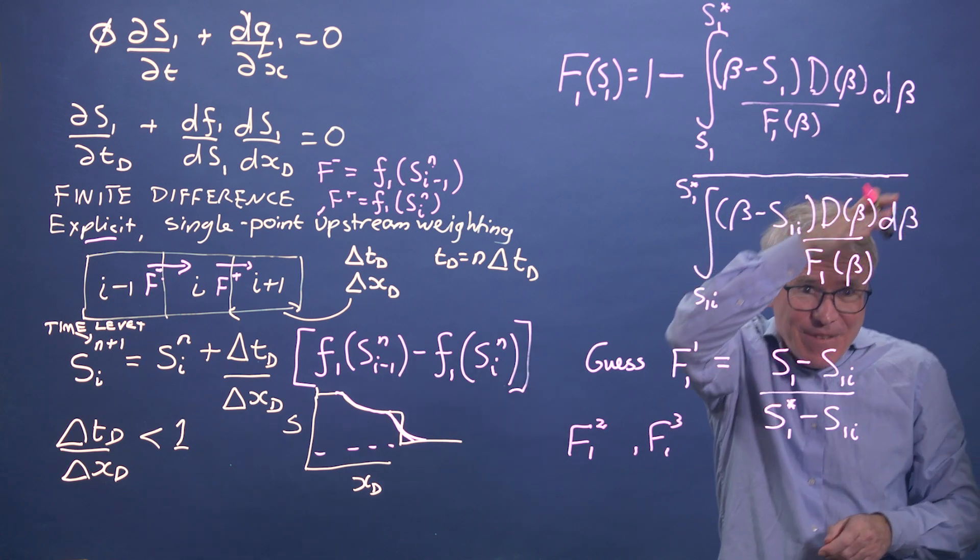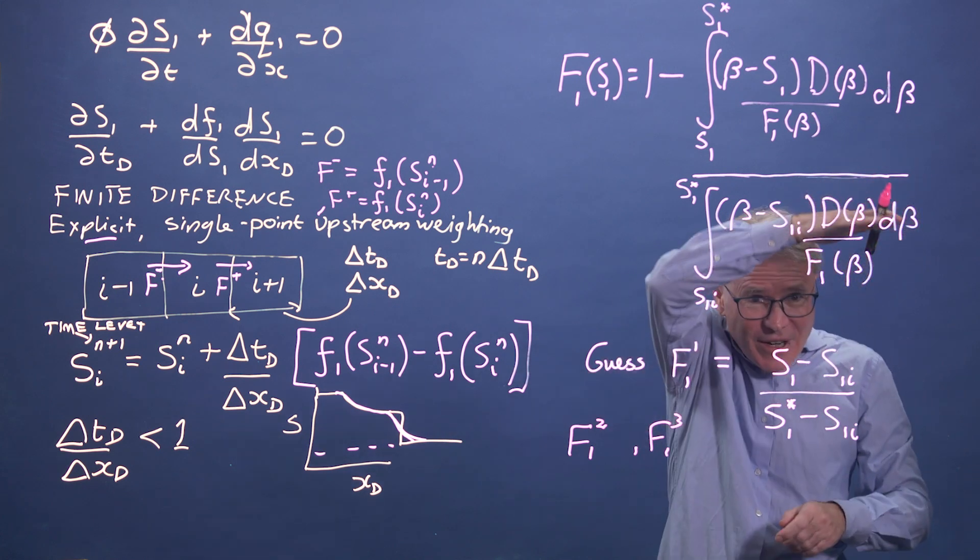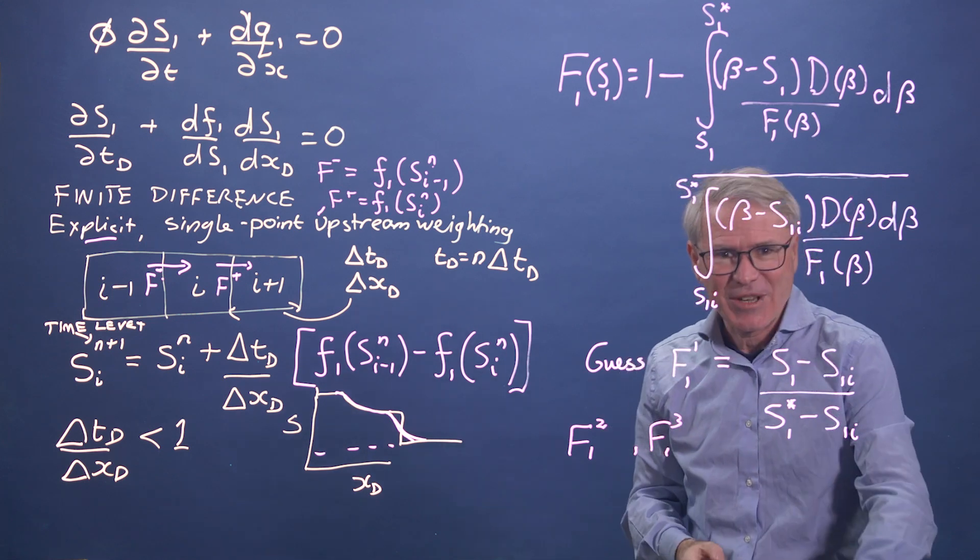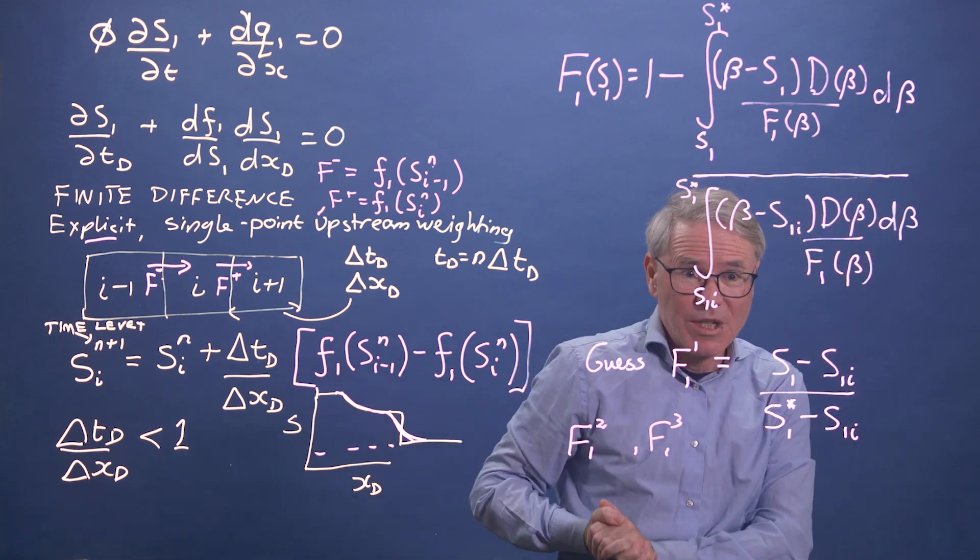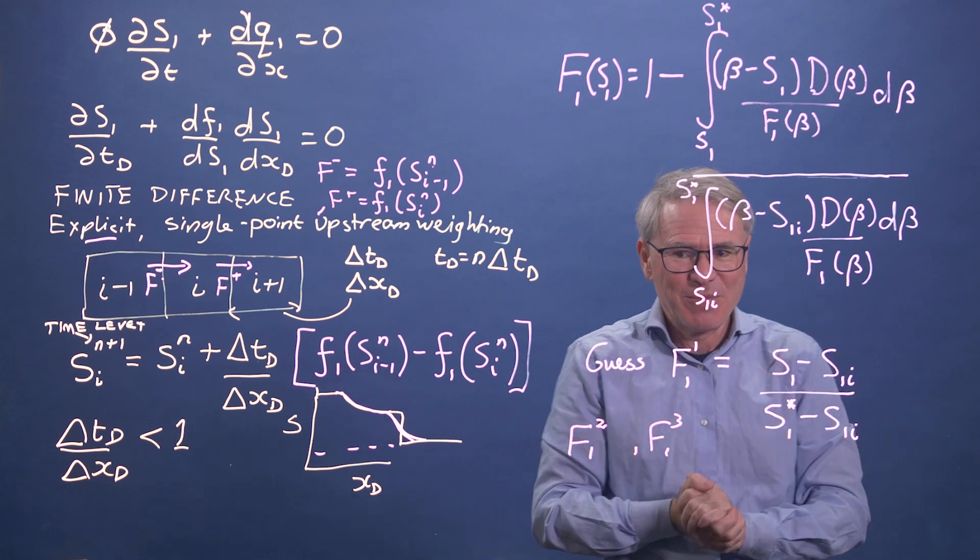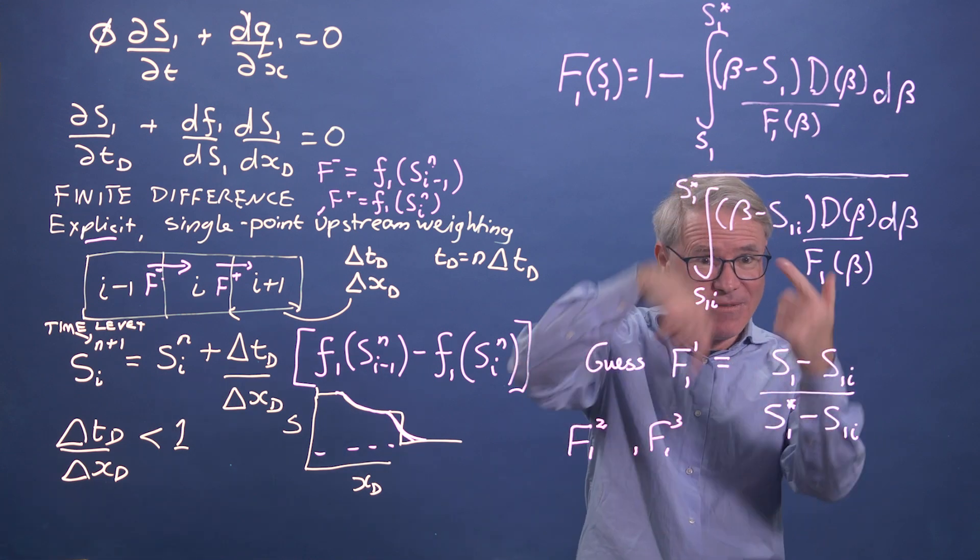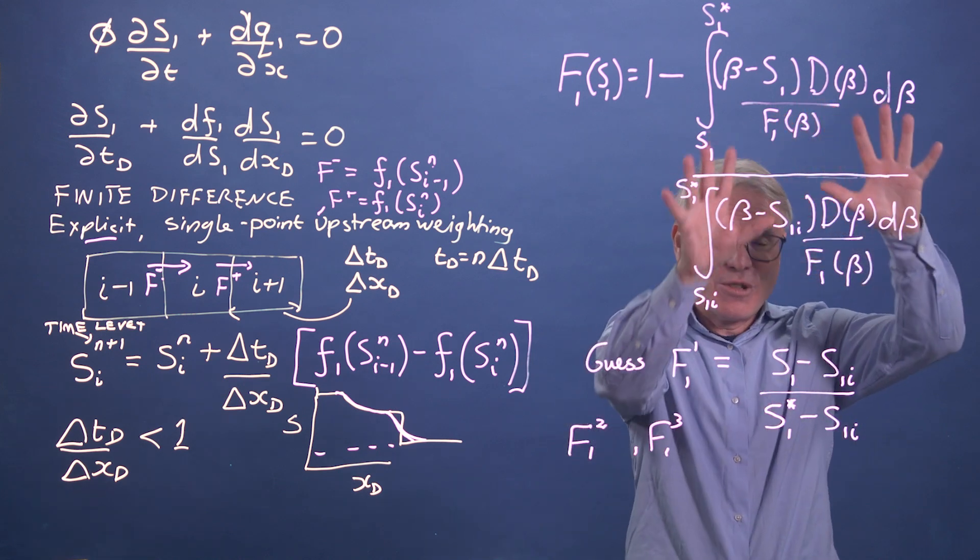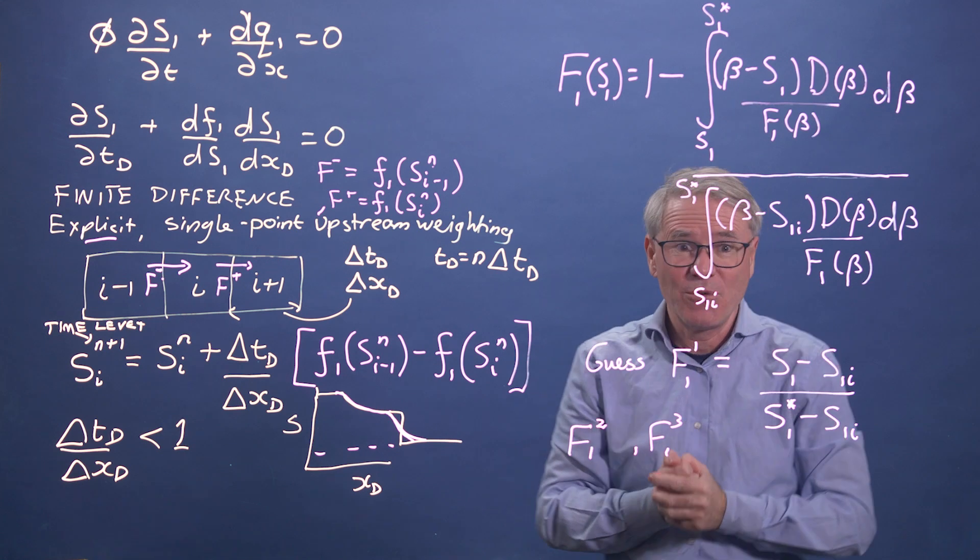Because you're just deviating your fractional flow from a straight line to something with a curvature that I showed in the previous video. So looks a little bit daunting, this integral, but it's perfectly possible to evaluate. And just an iterative guess. So this is numerical integration, looks complex, but actually relatively straightforward conceptually. And this is a finite difference approach. And again, relatively straightforward application of this explicit single point upstream weighting.